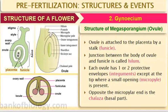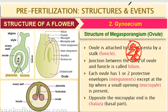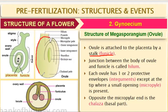Now let us read about the ovule — the structure of the megasporangium. The ovule is attached to the placenta by a stalk called the funicle. Looking at the diagram, this entire structure is the ovule, and this part connecting to the placenta is the funicle. The junction point where the ovule is attached to the placenta is called hilum.